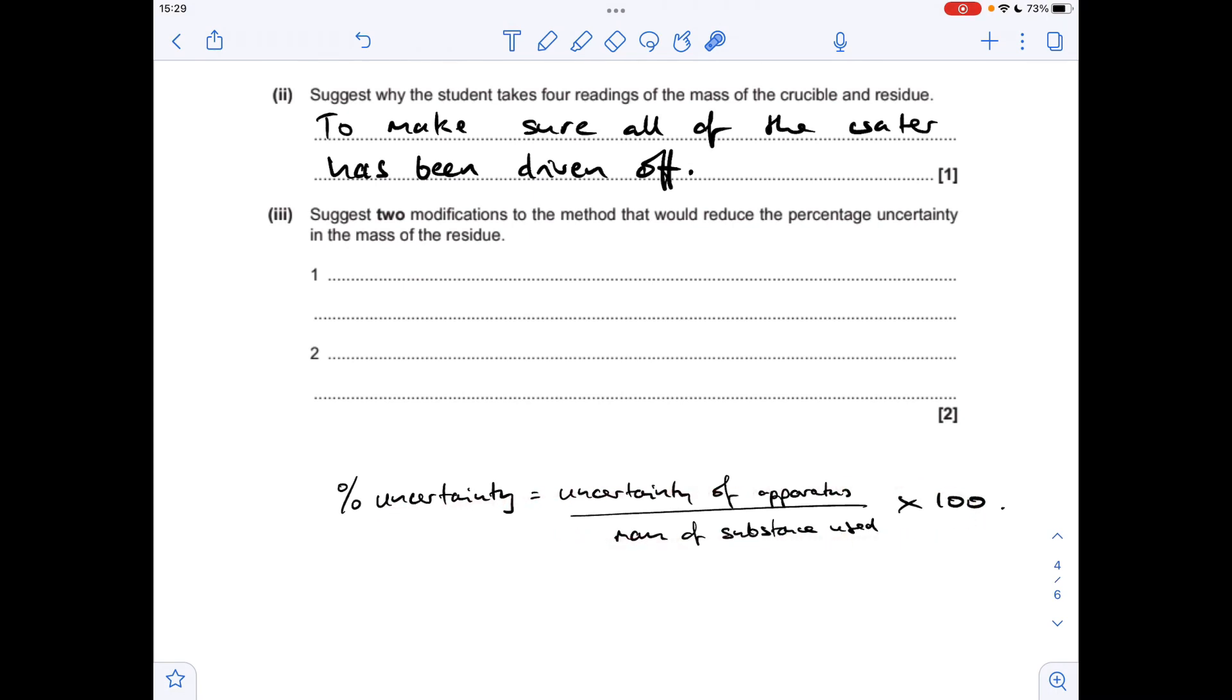To help me explain the second part of this I've got the formula there for how we calculate percentage uncertainty. It's the uncertainty of the apparatus, so the balance in this case, divided by the mass of the substance used multiplied by 100.